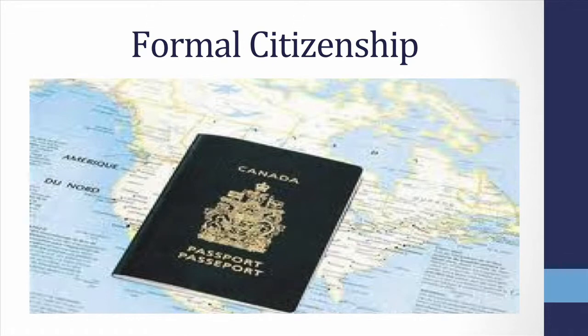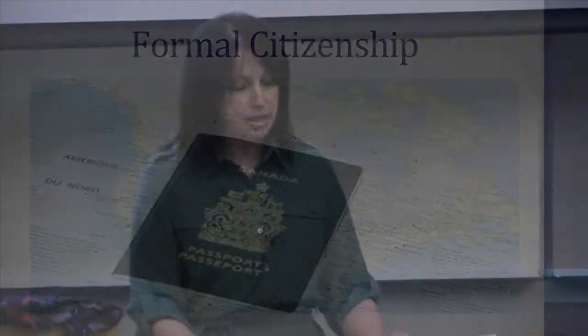Let me turn to the distinction between formal and substantive citizenship, starting with formal citizenship. Whenever we flip through an atlas, we are being shown a world in which the many colors of land spaces symbolically underscore that the seemingly natural order of the world is that of states. Of course, one can imagine other forms of social and political organization, but in the modern world, one really requires having citizenship — having the passport of a state — as a precondition for fully enjoying the benefits of political membership and rights.